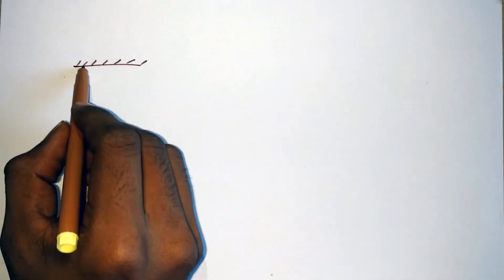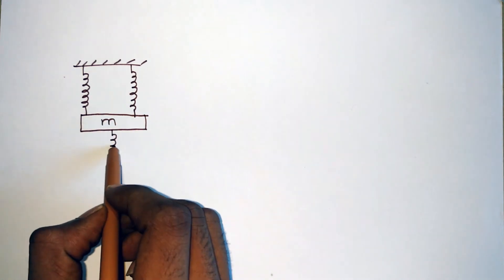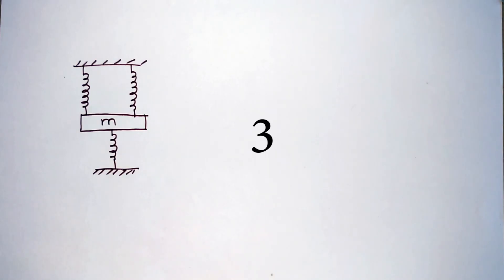Now I have a question for you. If three equal springs are connected as shown here, then what will be the equivalent spring constant? So the answer is 3k. Here all three springs are connected in parallel.